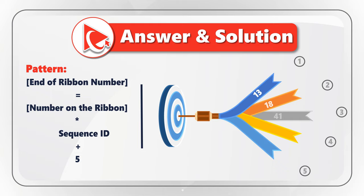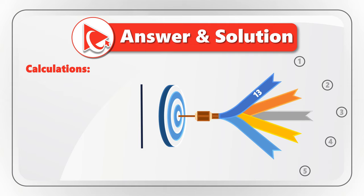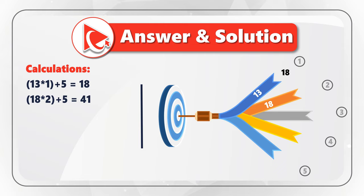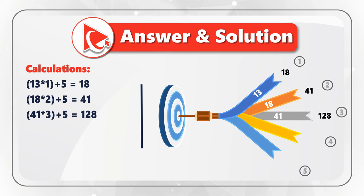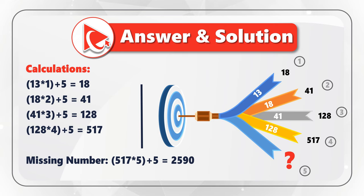The formula is: the end-of-ribbon number equals the number on top of the ribbon multiplied by sequence ID, plus 5. For example, the first blue ribbon has sequence number 1, so the end-of-ribbon number is 13 multiplied by 1 plus 5, which equals 18. The second ribbon: 18 multiplied by 2 plus 5 equals 41. The fourth ribbon: 128 multiplied by 4 plus 5 equals 517. The missing number is 517 multiplied by 5 plus 5, which equals 2590. So the correct answer is choice D, 2590.